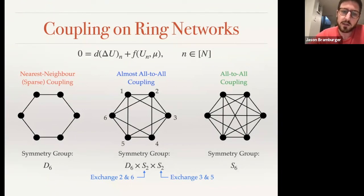And what you can see along the bottom here is that the nonlinear equations that need to be satisfied in order to find these steady patterns, they are equivariant with respect to increasingly larger symmetry groups as you put more connections into this network. And in fact, this has a huge effect on the expected bifurcation structures as well.